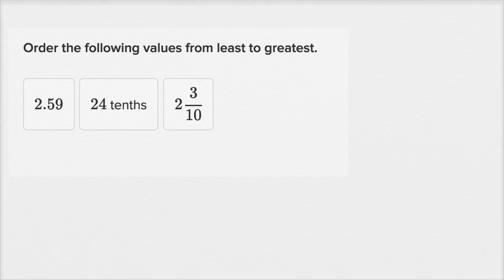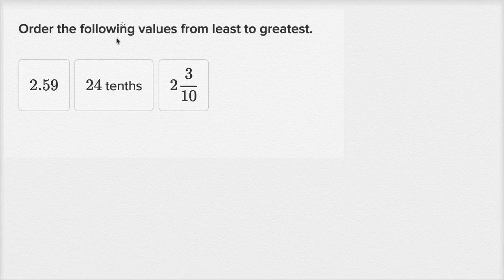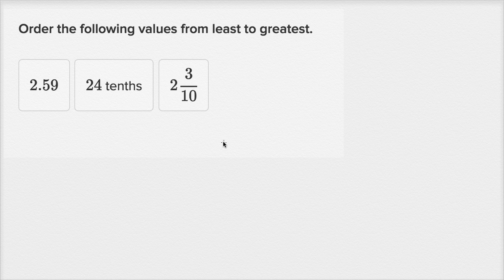Let's do one more. Order the following values from least to greatest. I took a picture from the Khan Academy exercise so I won't be able to drag them around, but I'll think about the numbers and write them in order. Let's write them all as decimals — that's the easiest thing to do. So this one is already written as a decimal: 2.59.